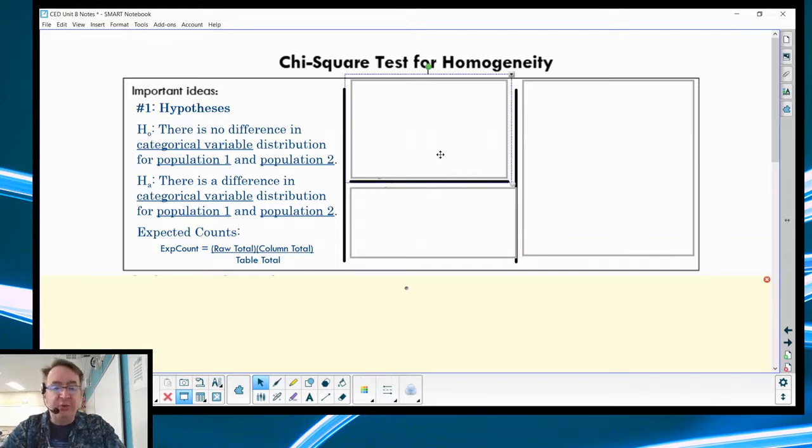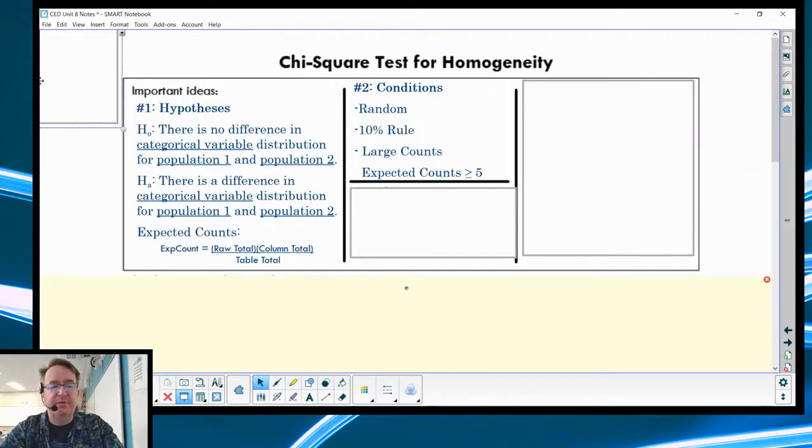Big idea number two: conditions. You're still doing random, you're still doing 10% rule, and you're still doing large counts. Large counts, again, with chi-squared, since we're talking about not just success and failure, we're talking about multiple values in the category have to be bigger than or equal to five instead of ten.